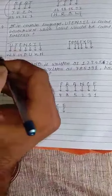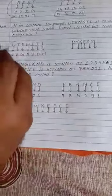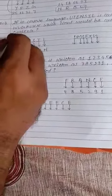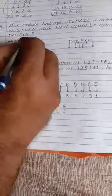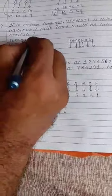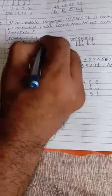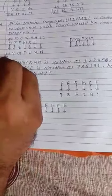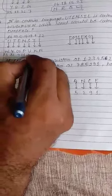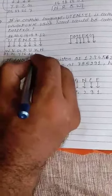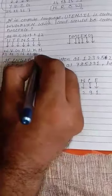What is the position of U? That is 21. T is 20, E is 5, N is 14, S is 19, I is 9, L is 12. The code is: W is 23, V is 22, G is 7, P is 16, U is 21, K is 11, and N is 14.